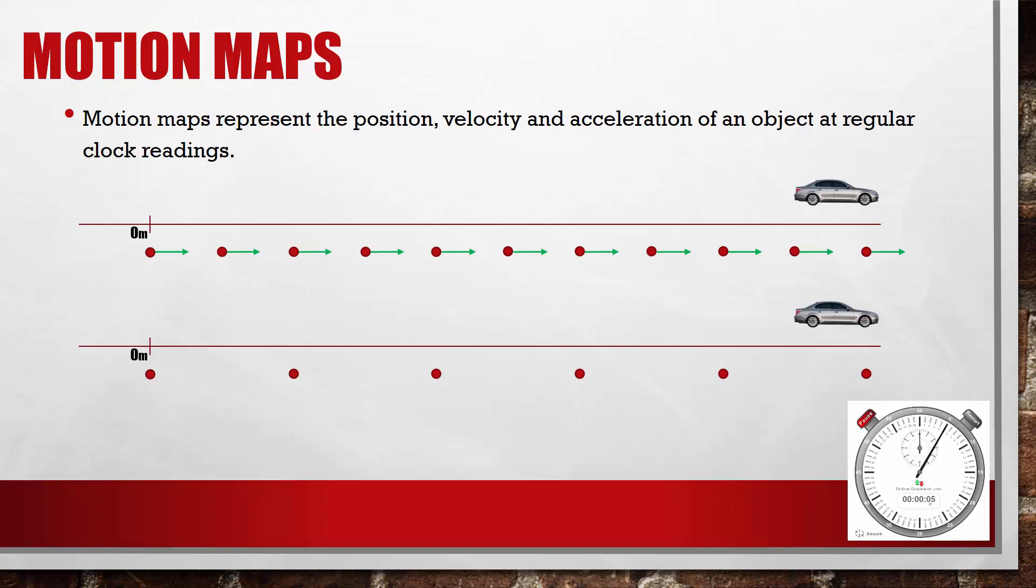If we follow the same convention to draw the arrows that represent our velocities, we'll find that they are significantly longer, representing the greater velocity at which the car traveled.